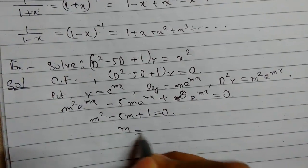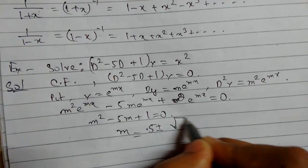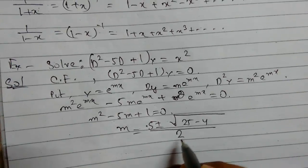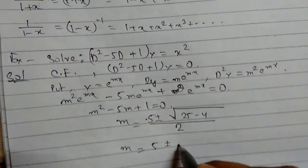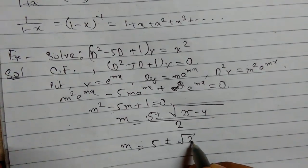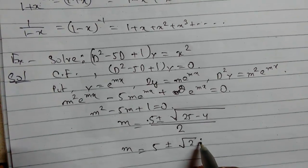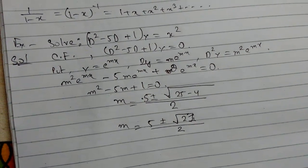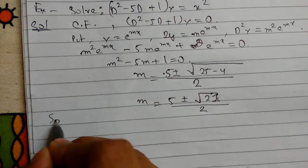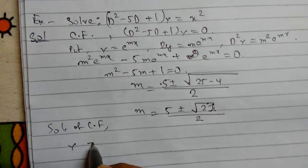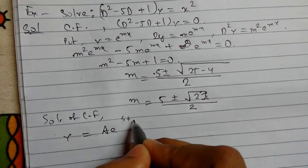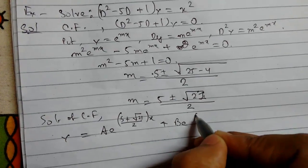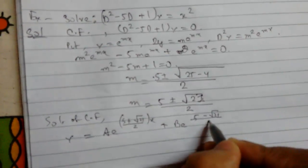This will not factorize, so we need to use the quadratic formula: m equals minus b plus or minus root of b² minus 4ac, all over 2a. So m turns out to be (5 ± √21) / 2. The complementary function is therefore y = A·e^((5+√21)/2 · x) + B·e^((5-√21)/2 · x).